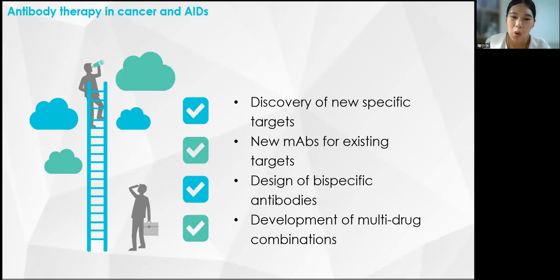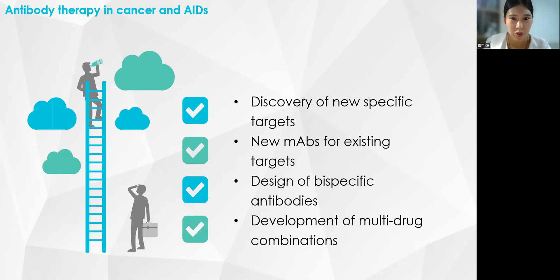Antibody therapies offer hope of survival for a growing number of patients with cancer, autoimmune diseases, and co-occurring cancer and autoimmune disease. It is increasingly important to develop antibody therapies: to discover new targets of action to improve precision and effectiveness, to develop new drugs for discovered targets to reduce toxic effects, to design new dual-antibody drugs to make drug effects more powerful, and to explore the rules of combining multiple drugs in clinical practice. These are the directions antibody therapies are steadily moving toward, requiring joint exploration and cooperation from multiple fields.